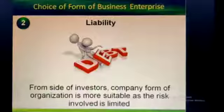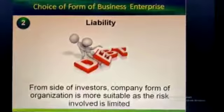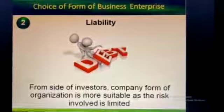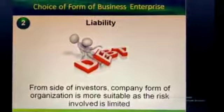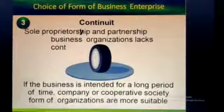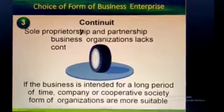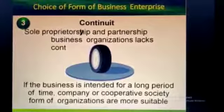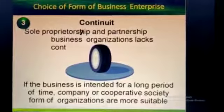Second is liability. In sole proprietorship and partnership, the owner or partners have unlimited liability. In joint Hindu family business, only the karta has unlimited liability. In the case of cooperative societies and companies, members have limited liability. So from the investors' perspective, the company form of organization is more suitable as the risk involved is limited. Third is continuity — an ideal form of organization should ensure continuity of the business, but there is a lack of continuity in sole proprietorship and partnership. So if the business is intended for a longer period, company or cooperative society forms are more suitable.